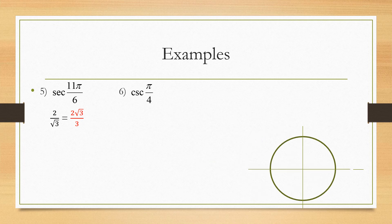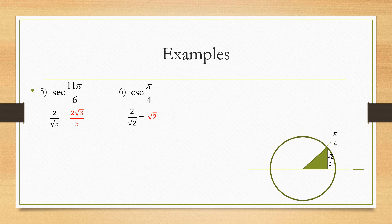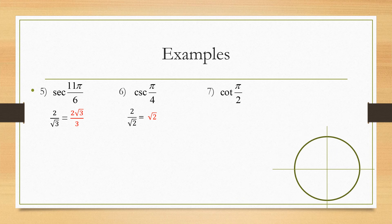Let's do cosecant of pi over four. Pi over four is just the first tick mark — draw in our triangle. Cosecant is the inverse of sine, and sine is the opposite side, which is radical two over two. All we have to do is flip that answer and rationalize to get radical two.